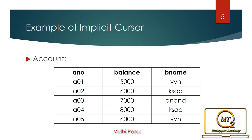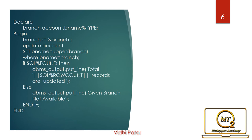Let's take an example to understand Implicit Cursor. Here we have an account table where all branch names are stored in lowercase. We take input from the user and, if the branch is available in the table, convert it to uppercase and display the number of records affected. Otherwise, display a message that the branch is not available. Using Implicit Cursor, we can find the status of the last DML statement.